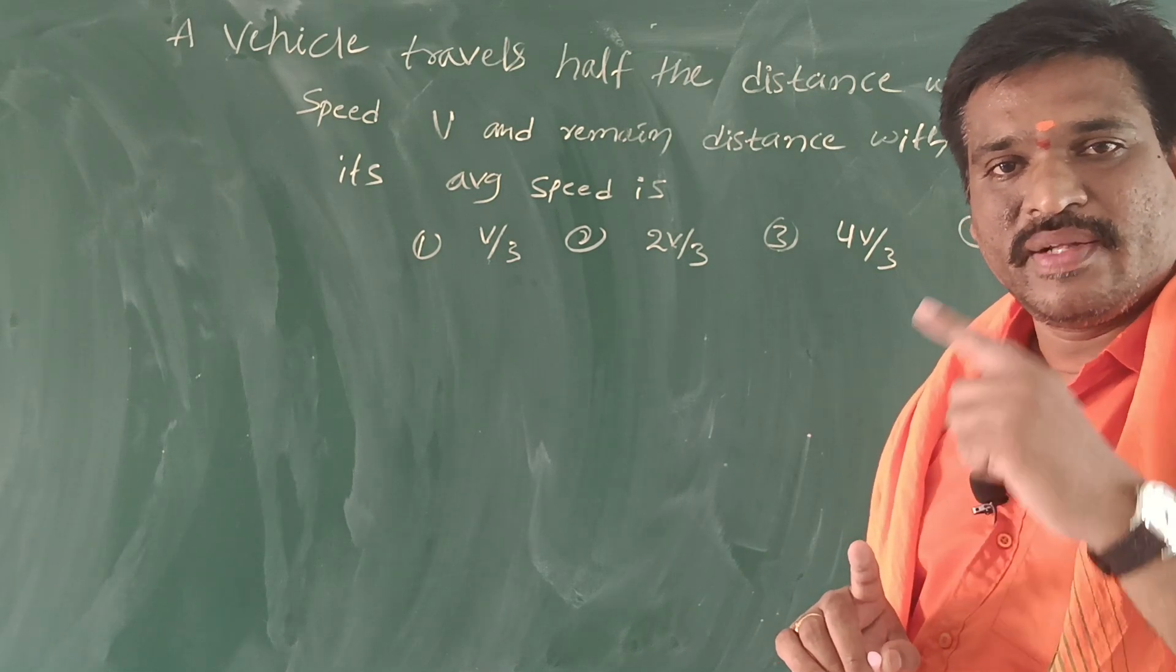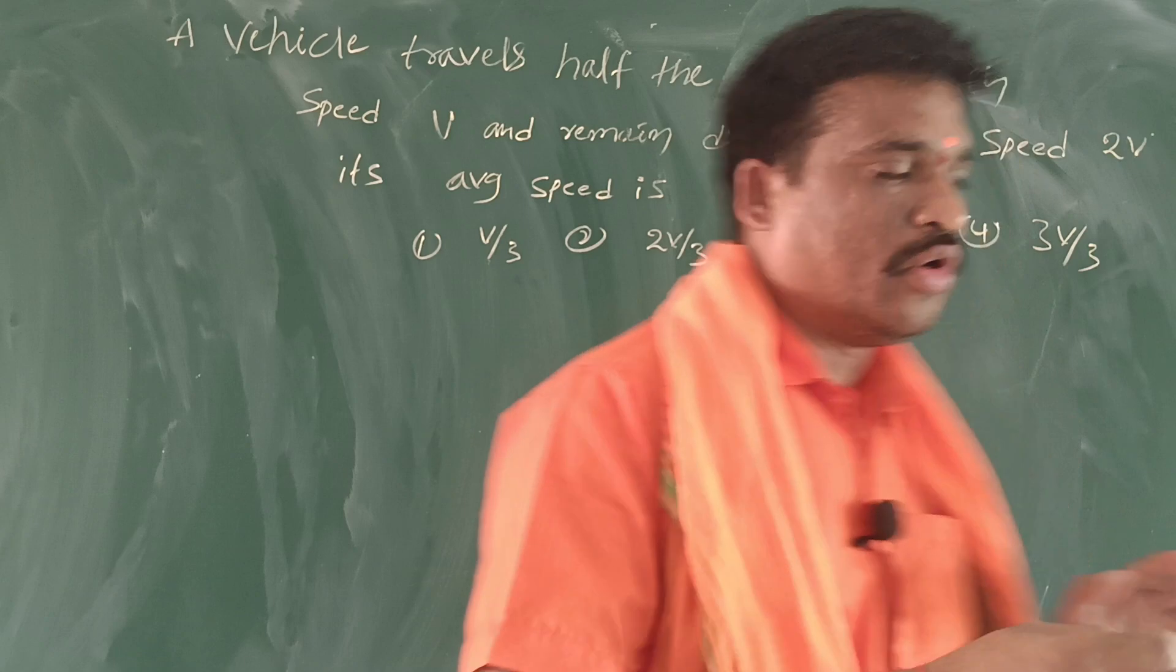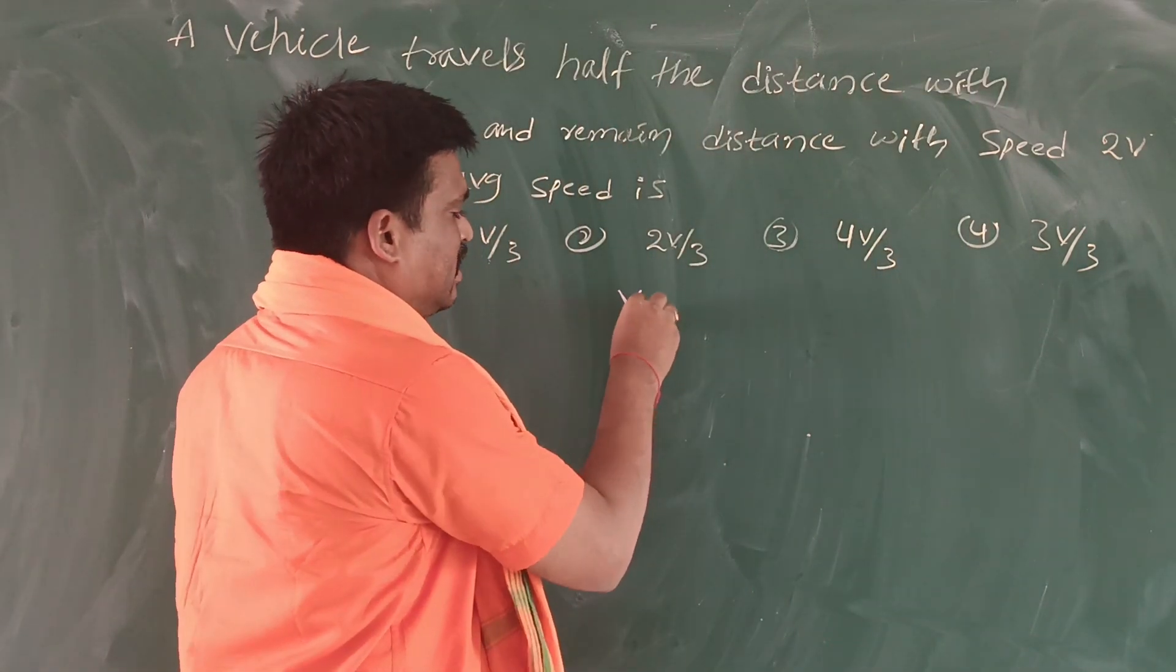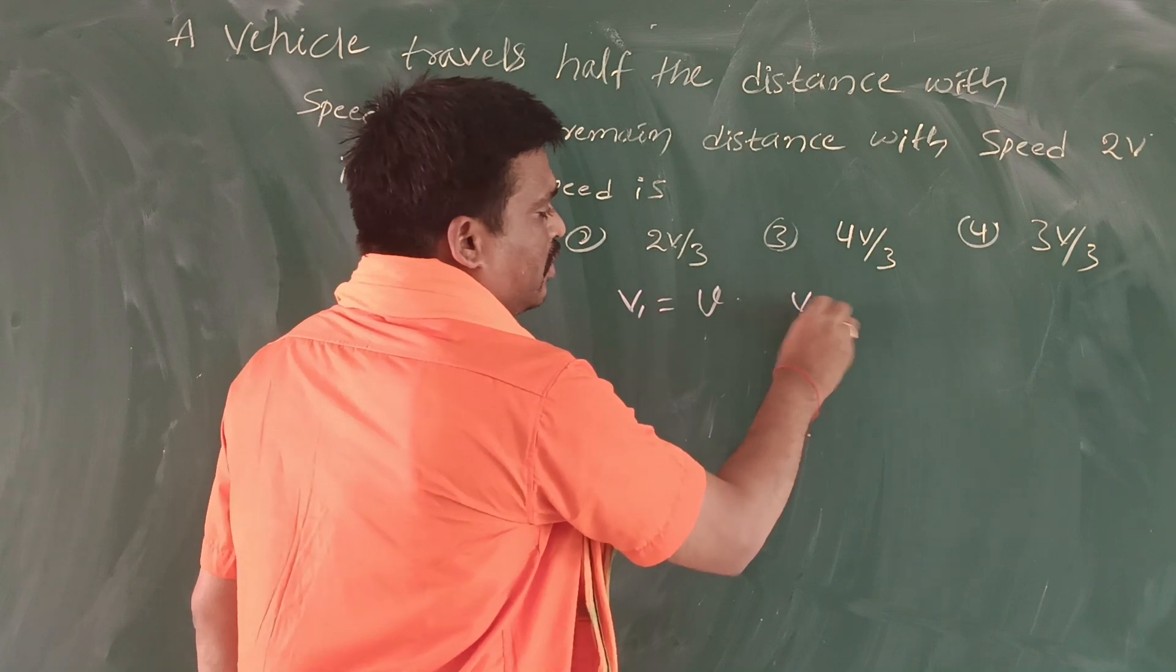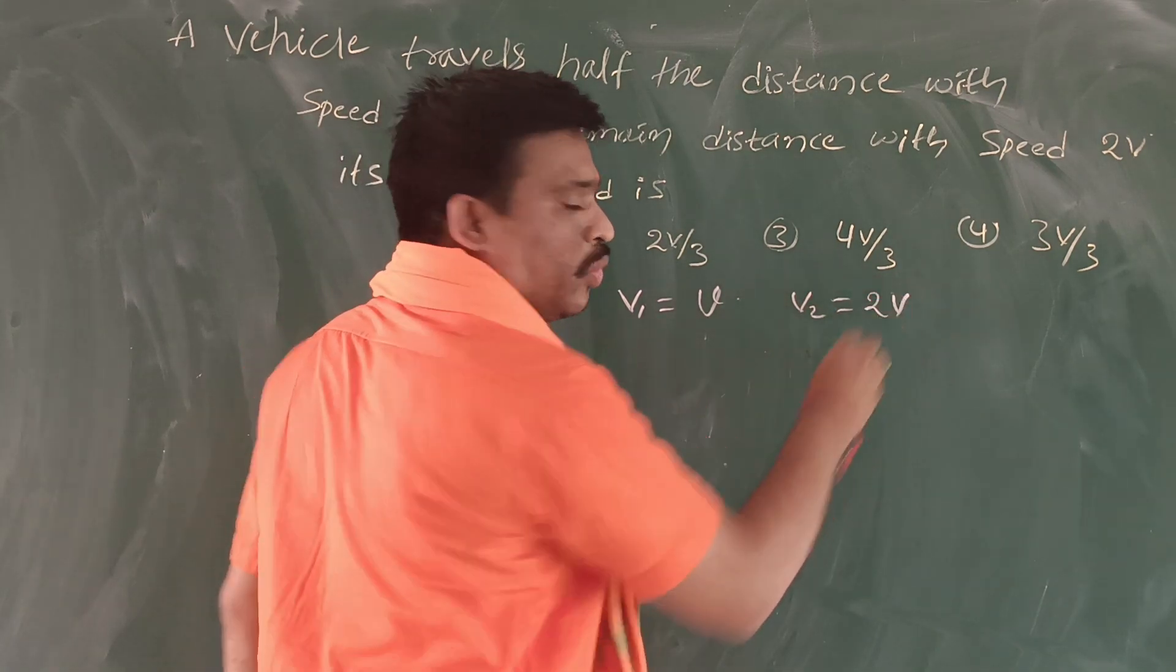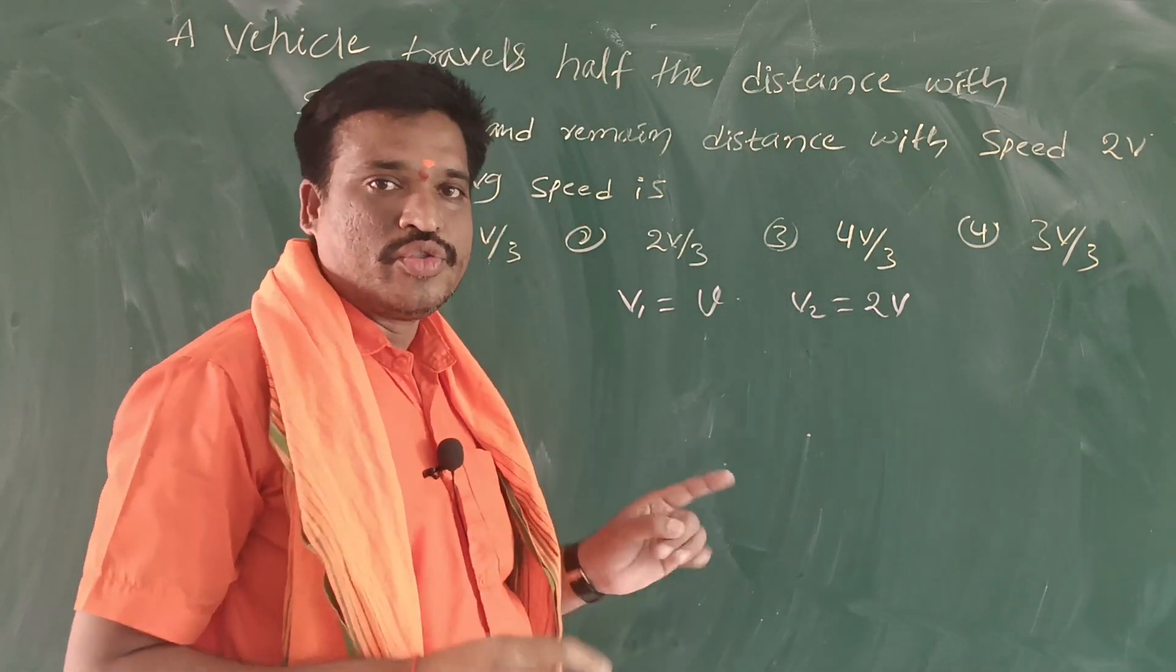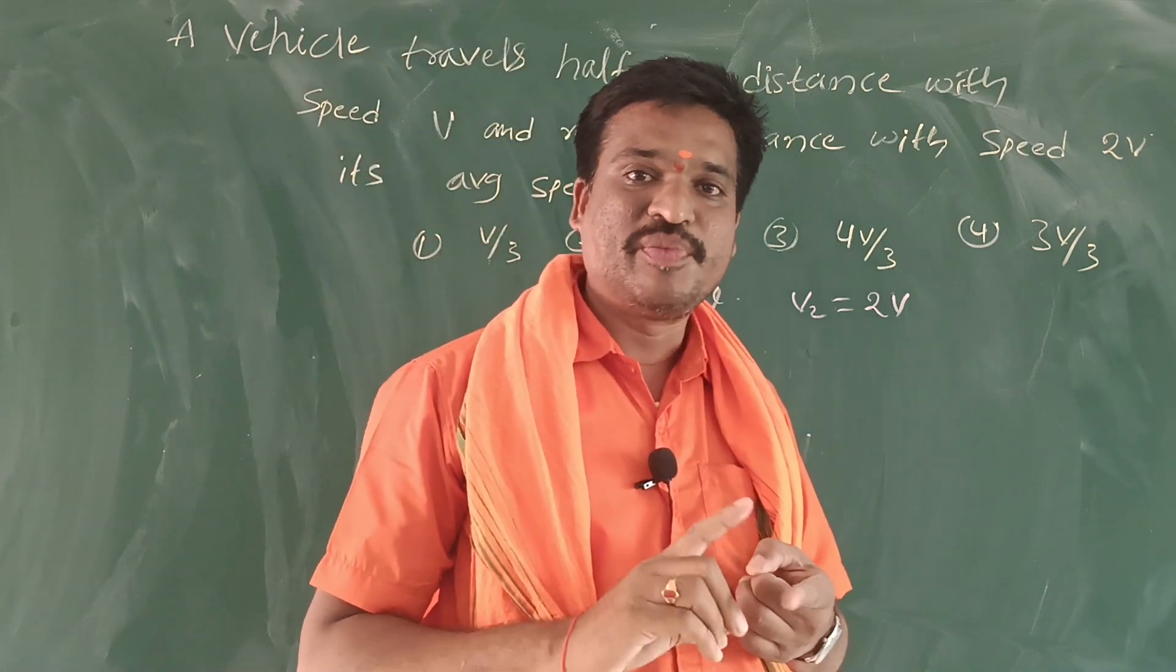First speed is v, second is 2v. So v1 equals v, v2 equals 2v. You should find the average speed.